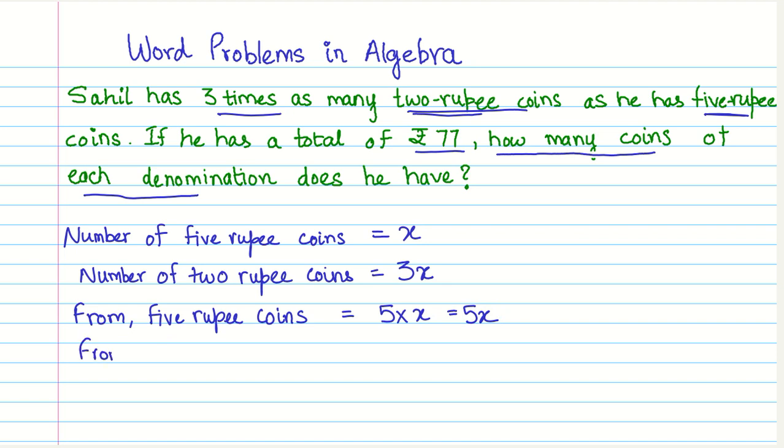Similarly from two rupee coins, how much amount does he have? From two rupee coins, the amount that he has equals 3x. So it will be two multiplied by the number of two rupee coins. So two times 3x or that comes out to be 6x, right?